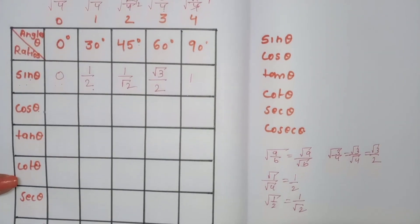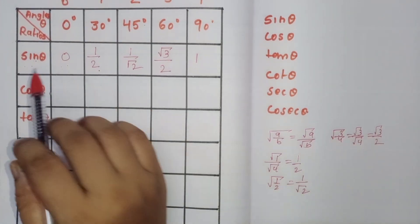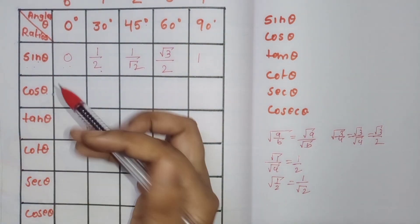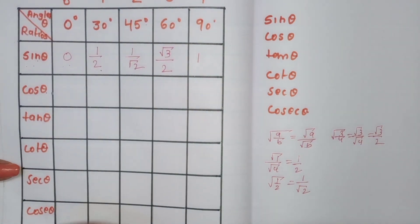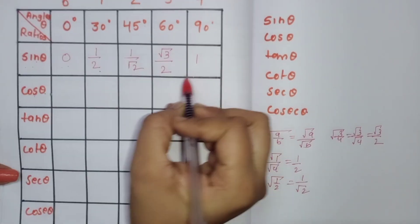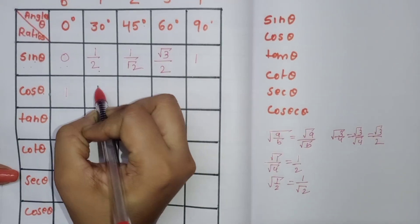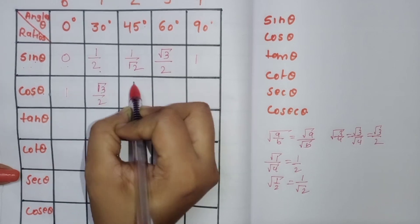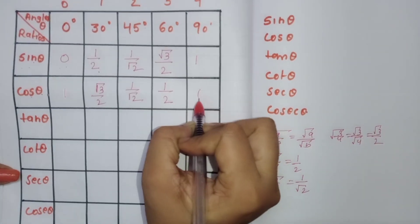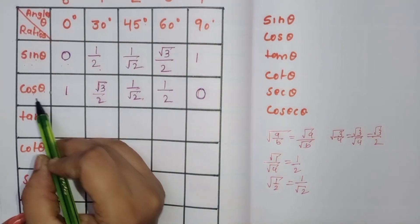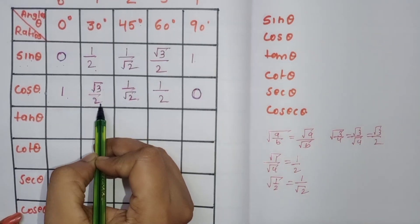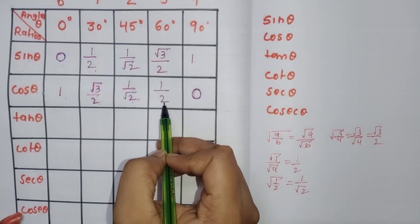Now, how do we find the other trigonometric ratios? For cosine, we simply reverse the sine values. So cos 0° = 1, cos 30° = √3/2, cos 45° = 1/√2, cos 60° = 1/2, cos 90° = 0. Cosine is the sine values written in reverse order.